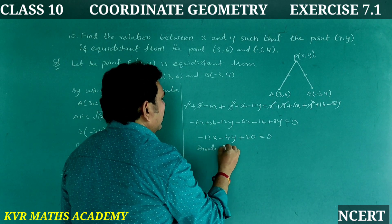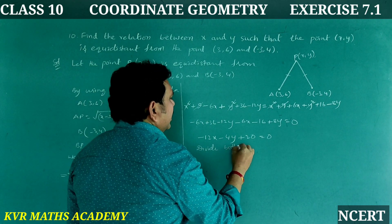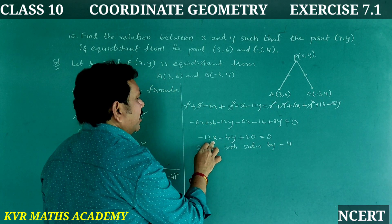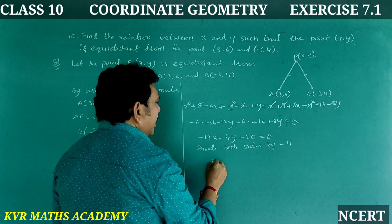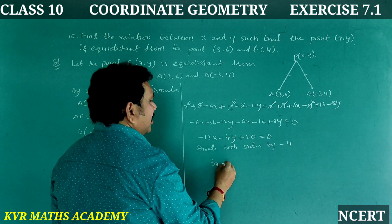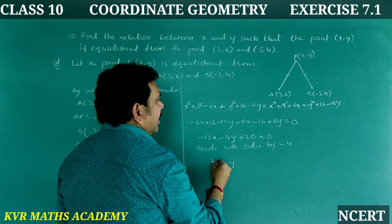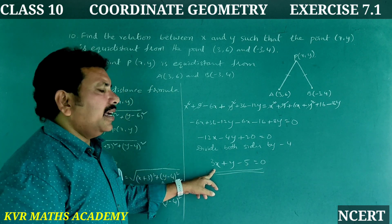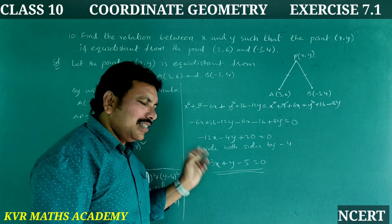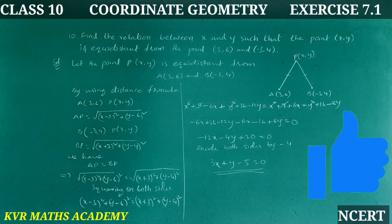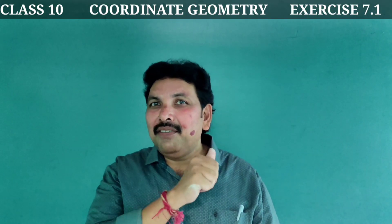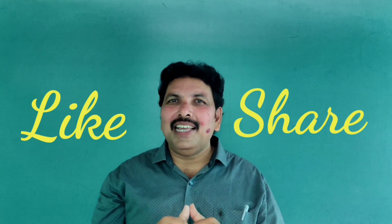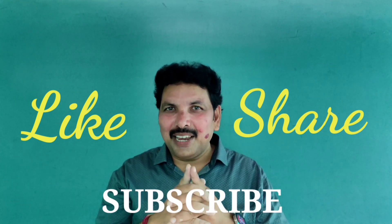Dividing both sides by −4: 3x + y − 5 = 0. This is the relation between x and y. Have you understood clearly? Viewers, if you like this video, please share it and subscribe to my channel. Thank you very much.